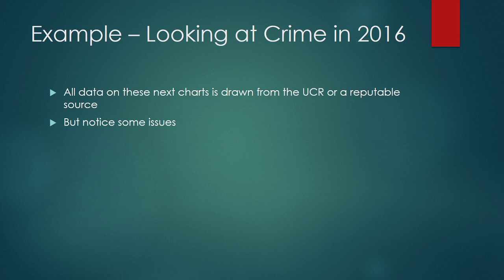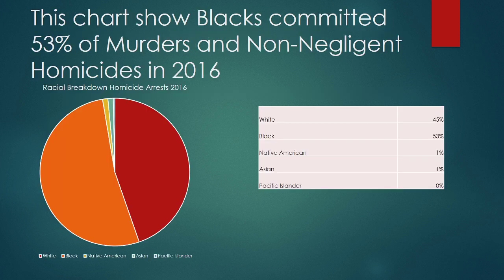We're going to look at the example of crime — specifically, arrests for murder and non-negligent homicide according to the UCR in 2016. I changed the title a little bit: I said 'arrests' but then omitted that word, simply giving you a chart that said 'blacks committed 53% of murders and non-negligent homicides.' That's not correct — it's a true statement, but it's not correct because these are just arrests, not actual committals. By omitting the word 'arrests,' you change what's being presented.